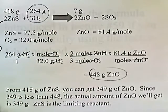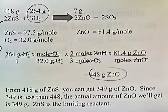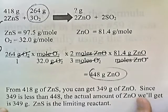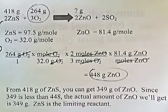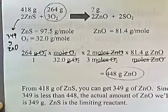It's just like the pie example — one of the ingredients is going to limit the actual amount that you can get.